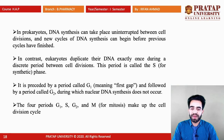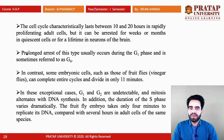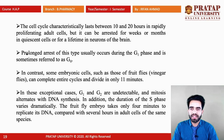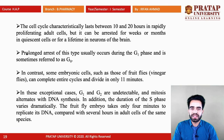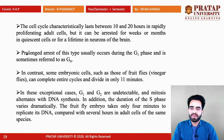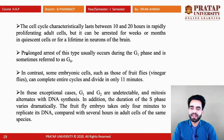G1, S, and G2 prepare the cell for mitosis and are essential for mitosis to take place. The cell cycle generally lasts between 10 to 20 hours in rapidly proliferating adult cells. However, it can be arrested for weeks or months in quiescent cells. Prolonged arrest usually occurs during G1 phase, sometimes called G0 or the quiescent phase.